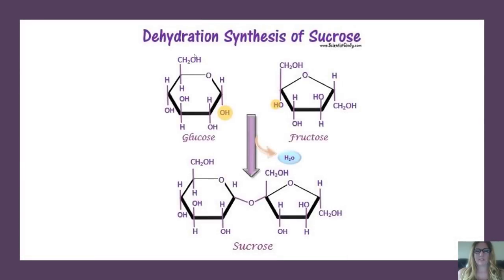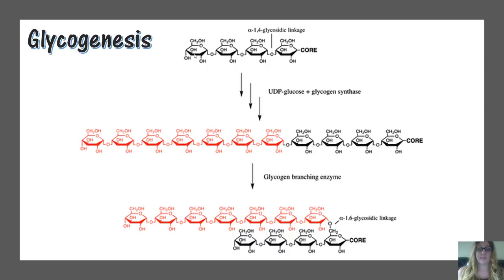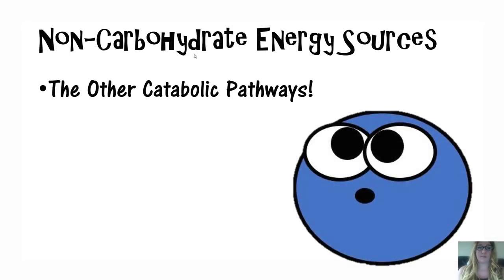Putting glucose and fructose together makes sucrose — our table sugar. Glycogen is a very long chain of sugar, a good energy storage polymer made of a string of glucose units with branching. It is a polymer of sugar — just a string of glucose.